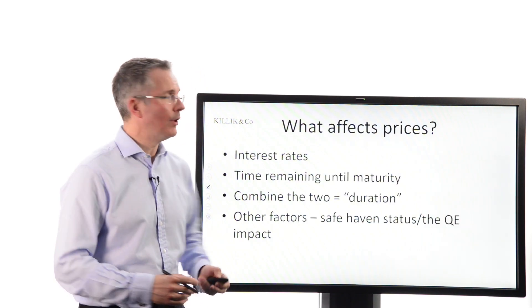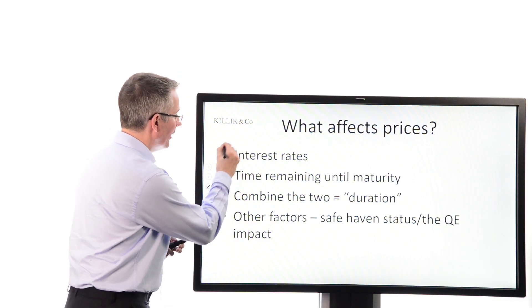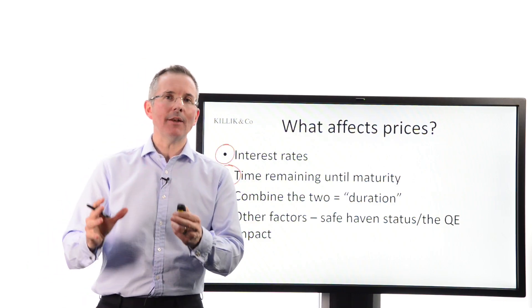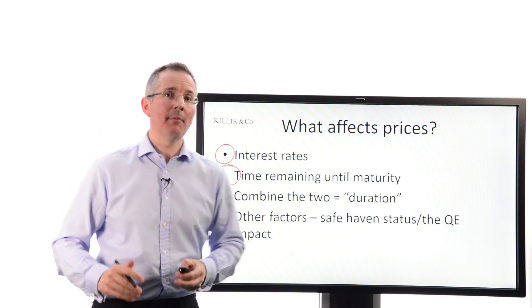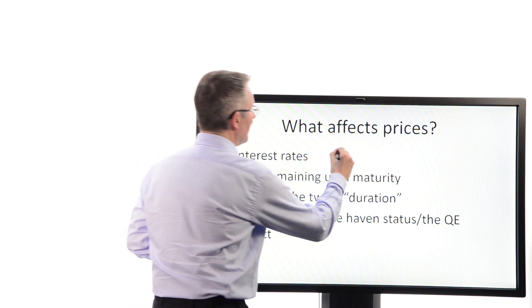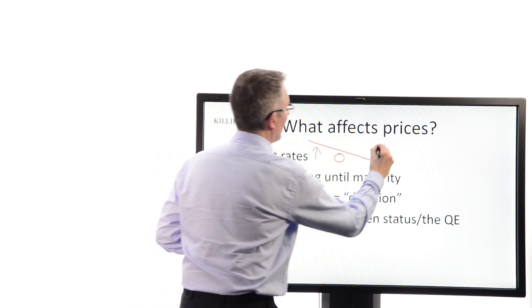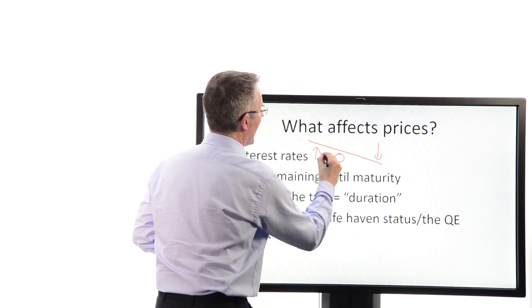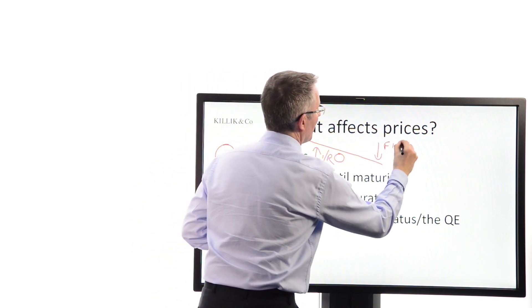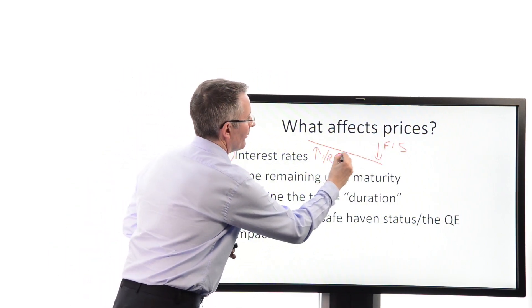So with no more ado, what affects fixed income security prices? Well, there are two main factors: interest rates and time remaining until maturity. And very simple, worth bearing in mind, the relationship between interest rates, those general rates of interest, and fixed income security prices on a sort of seesaw diagram, if you like, is as follows. It's inverse. As interest rates rise, fixed income security prices tend to fall, and vice versa.